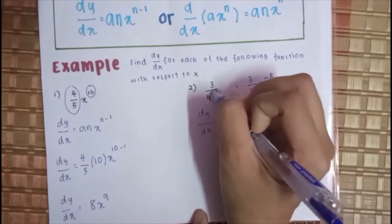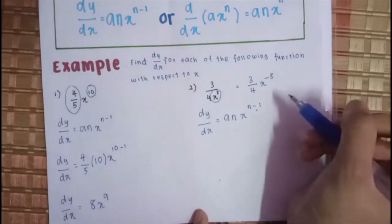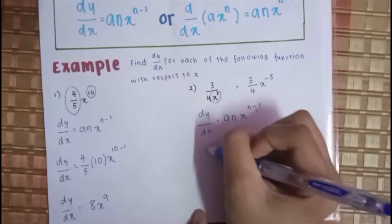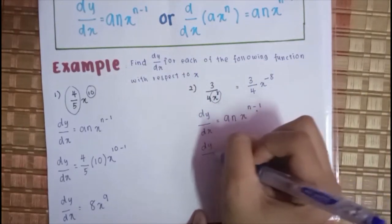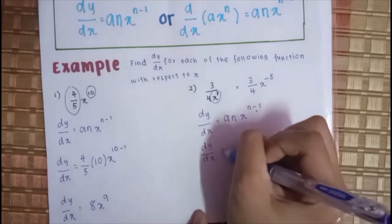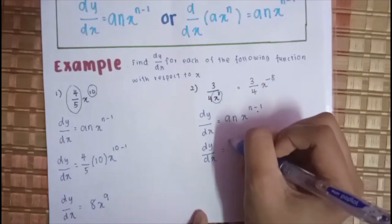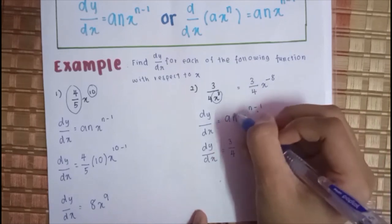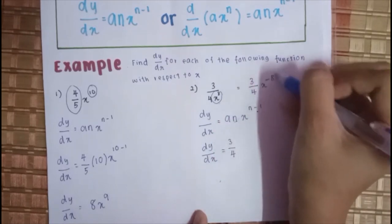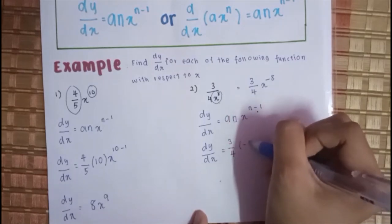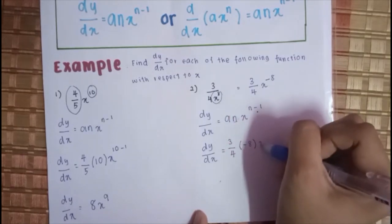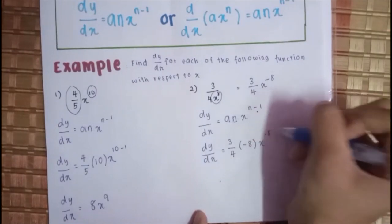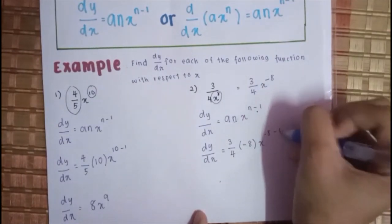Sebab apa? Sebab bila kita naikkan, dia akan jadi negatif. Masukkan je macam biasa. DY per DX sama dengan A kita berapa? 3 per 4. N kita berapa? N tadi kan integer, integer kita negatif 8. Negatif 8, X. N tadi berapa? 8 negatif 8, tolak 1.